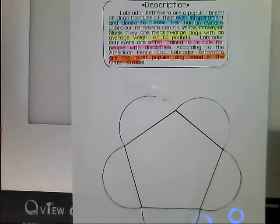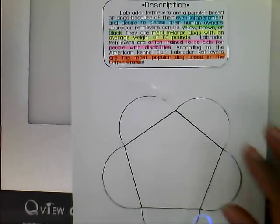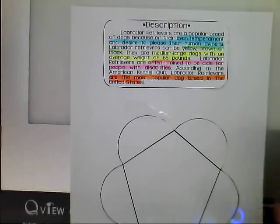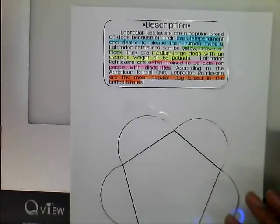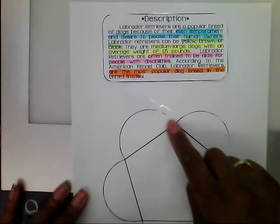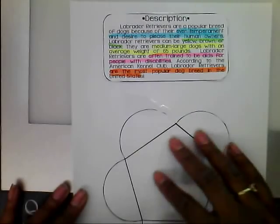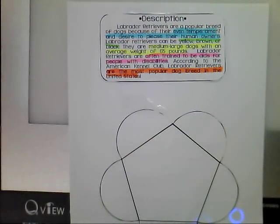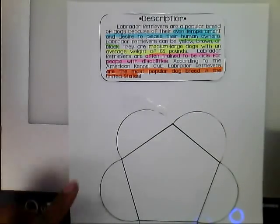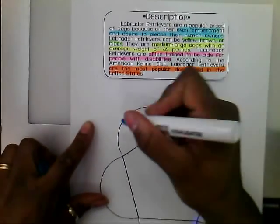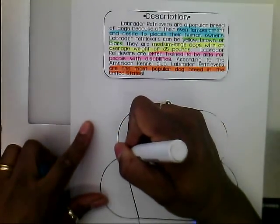Now that I've color-coded my paragraph, what I'm going to do is highlight the different petals here of my graphic organizer. For the blue, I'm going to do one in each color.